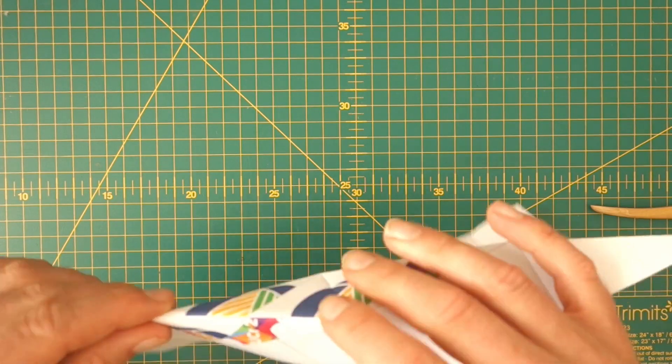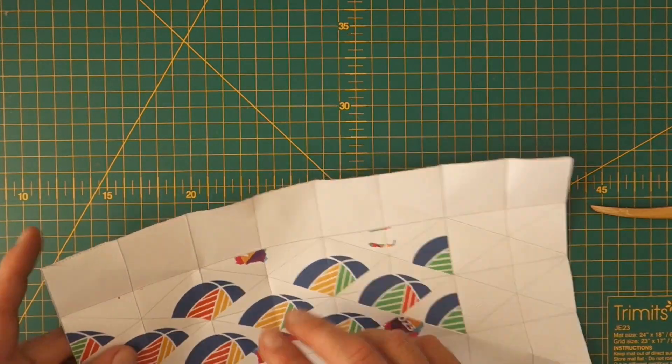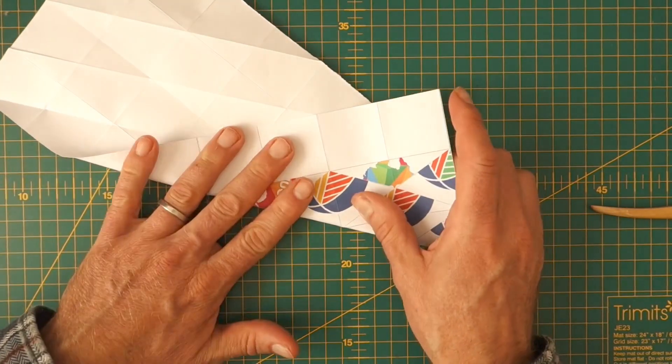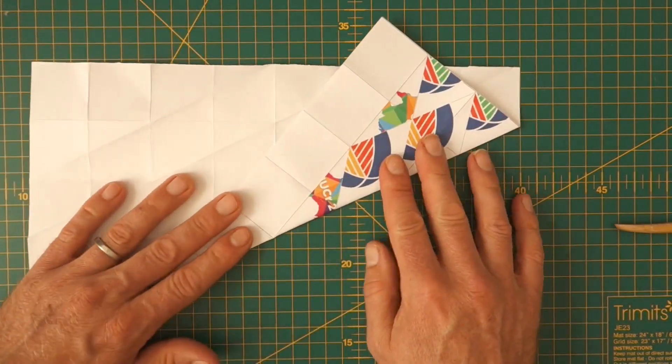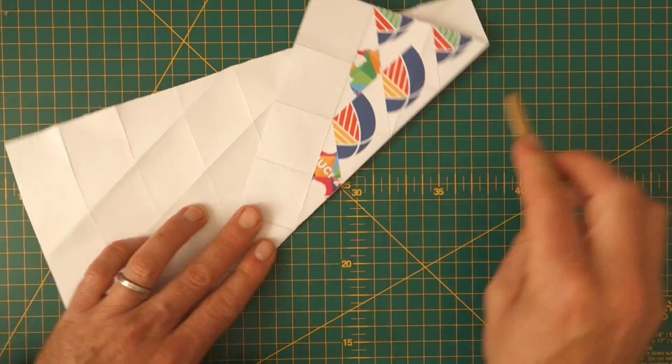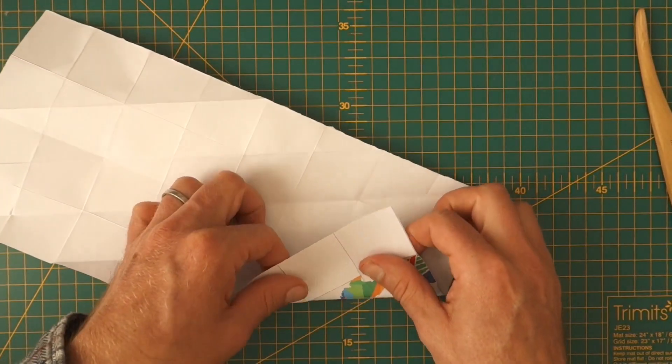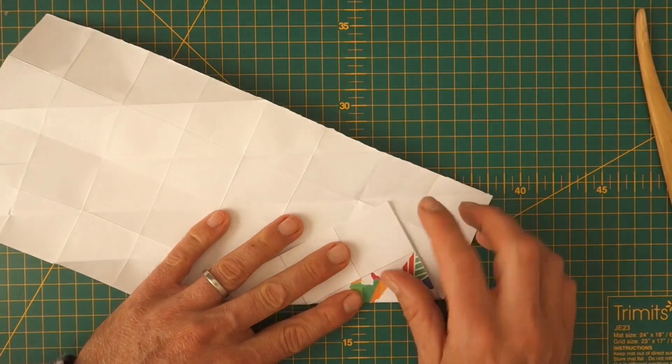Of course you can do this without the print on it. So if you have any piece of paper, the ratio is two to one. It's quite as long as it is wide. And you can just fold any piece of paper in this manner.